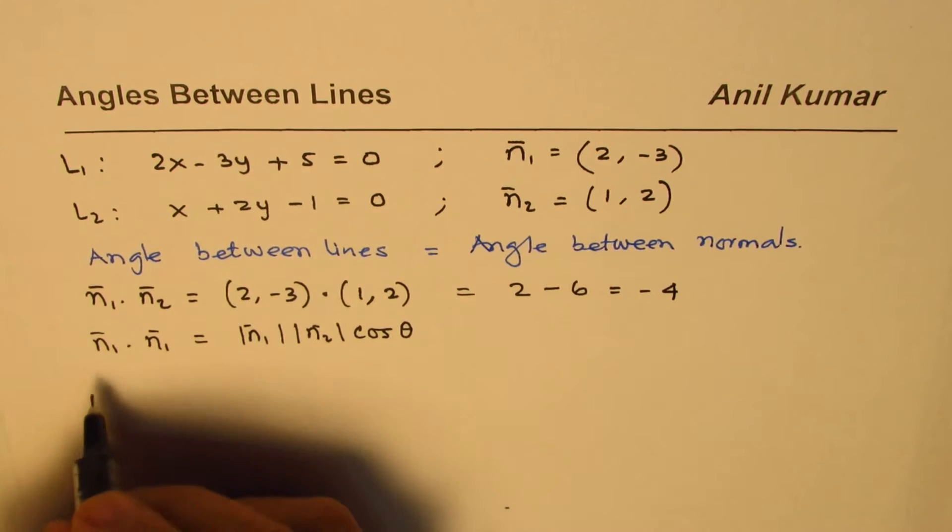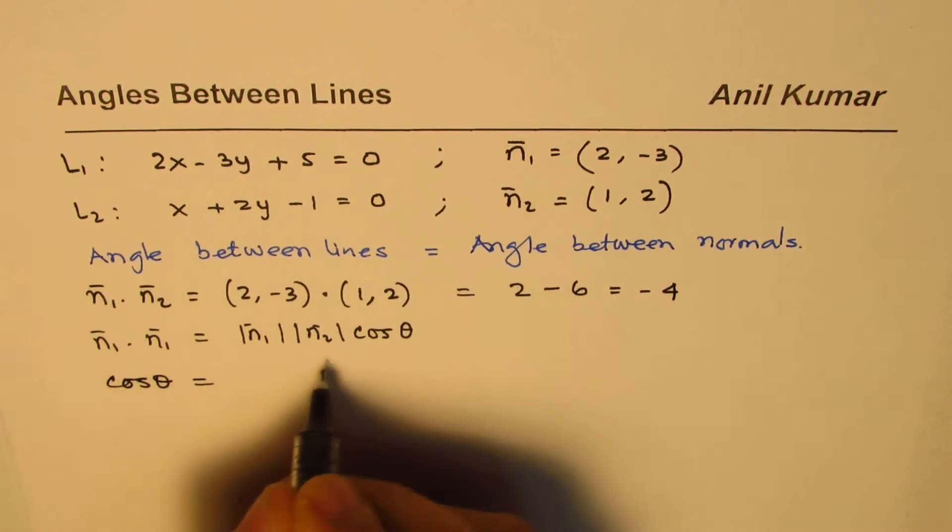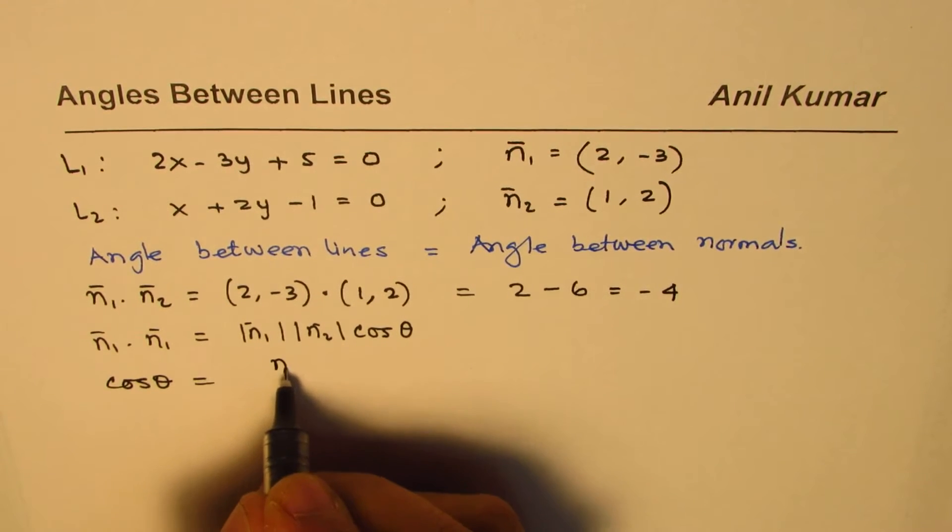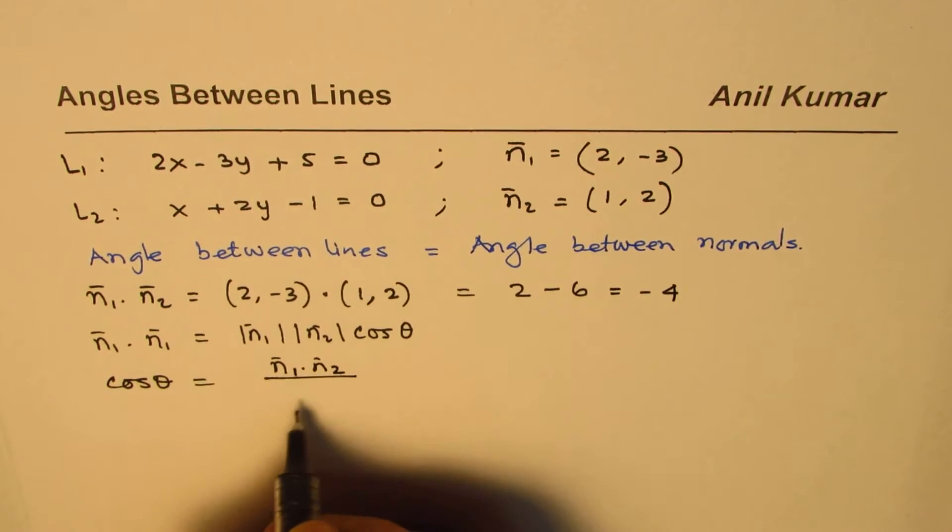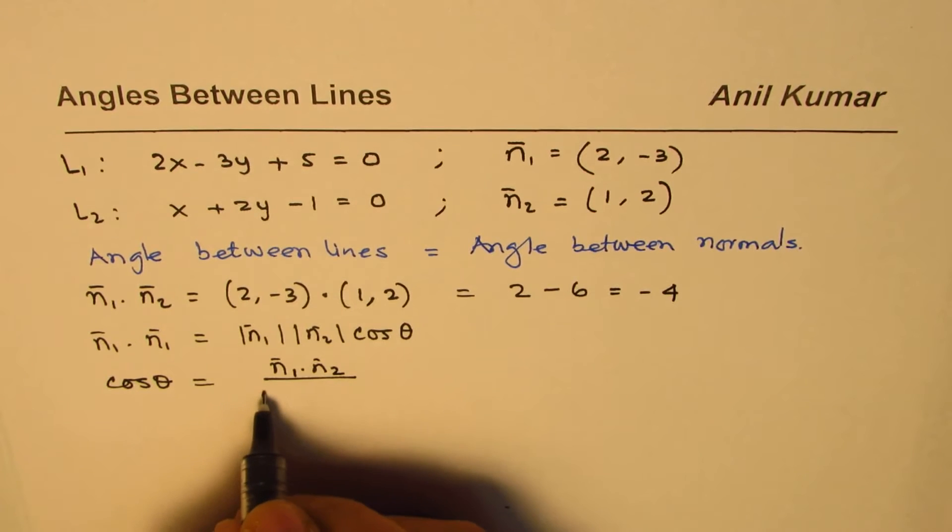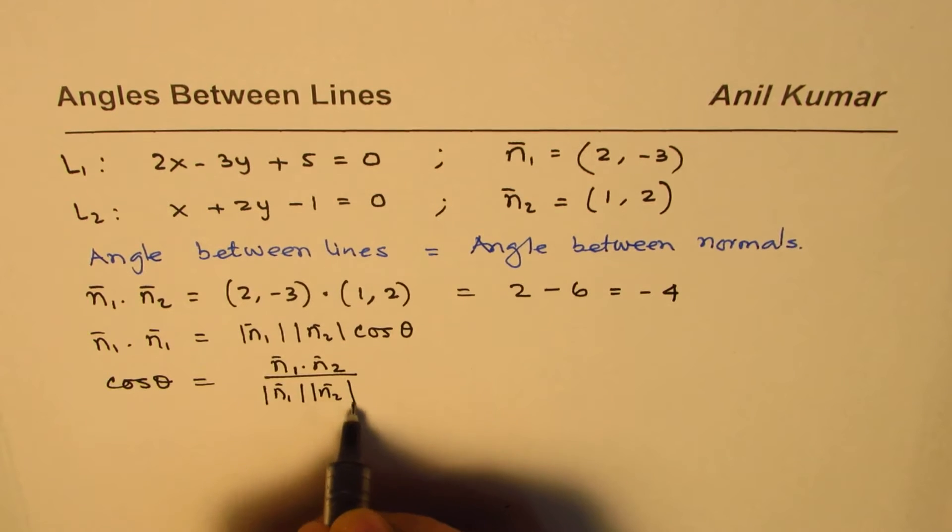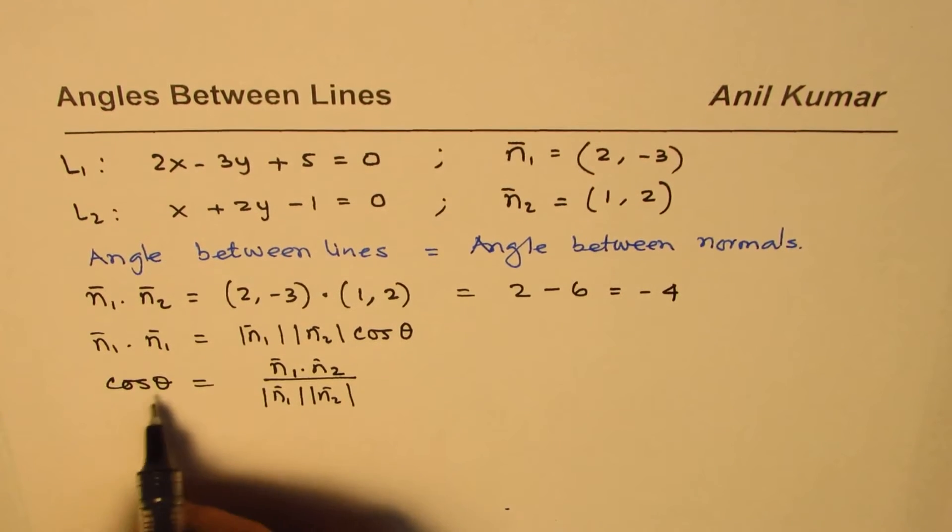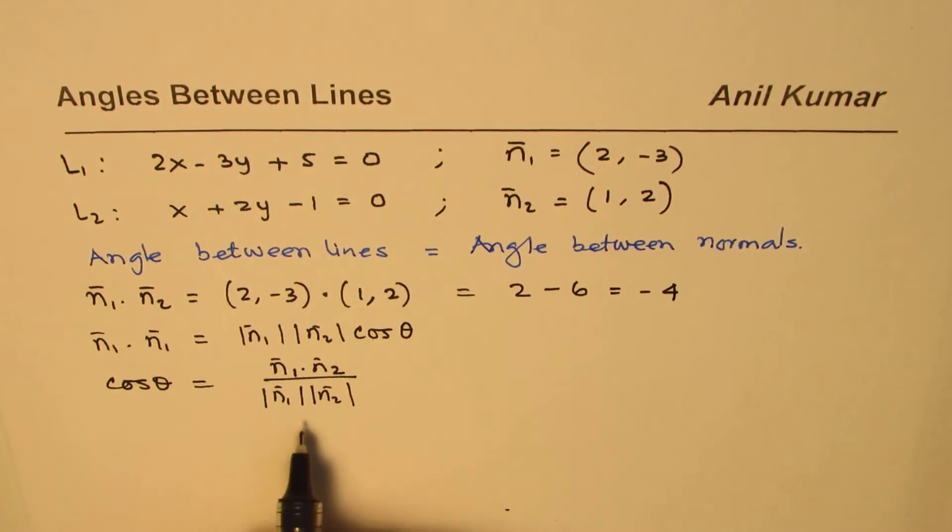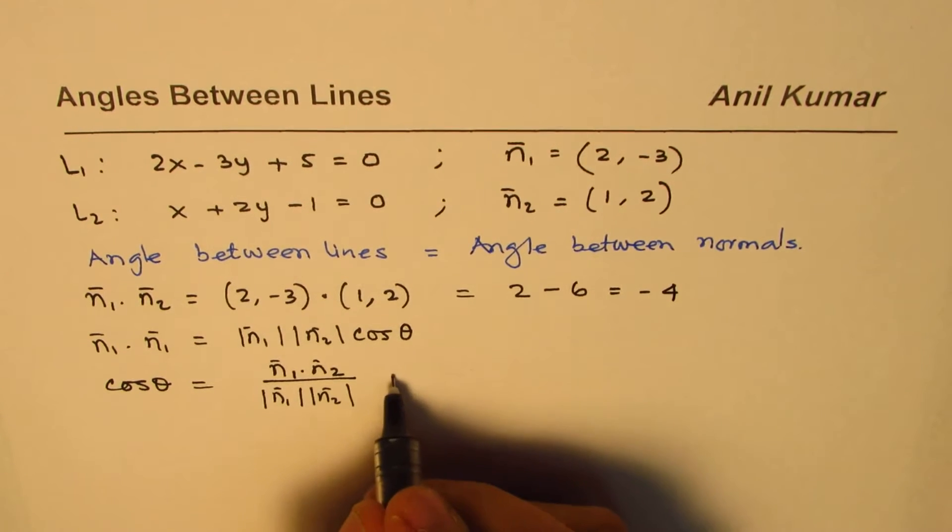So in general let me write down what cos theta will be. Cos theta is going to be the ratio of dot product of two vectors, n1 and n2, divided by their magnitudes, divided by the product of their magnitudes. So that becomes the angle theta. We will do cos inverse to get the answer.